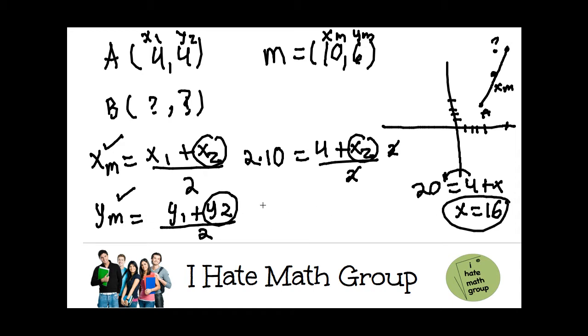Let's do the same with the Y. 6 equals Y1, which is 4 plus Y2 divided by 2. I do the same, I multiply both sides by 2, and I get that 12 equals 4 plus Y2. So Y equals 12 minus 4, which is going to be equals to 8.